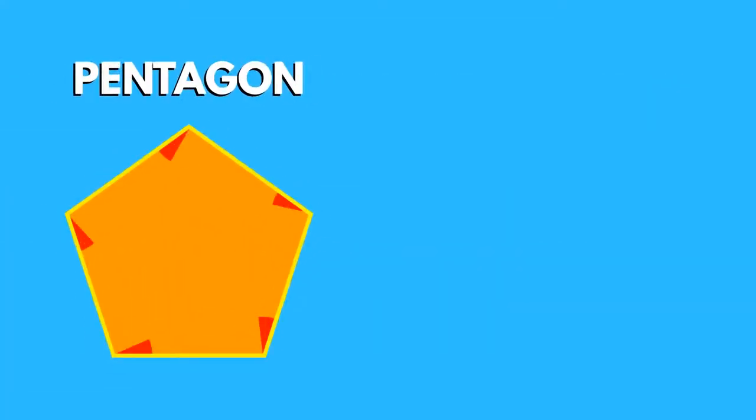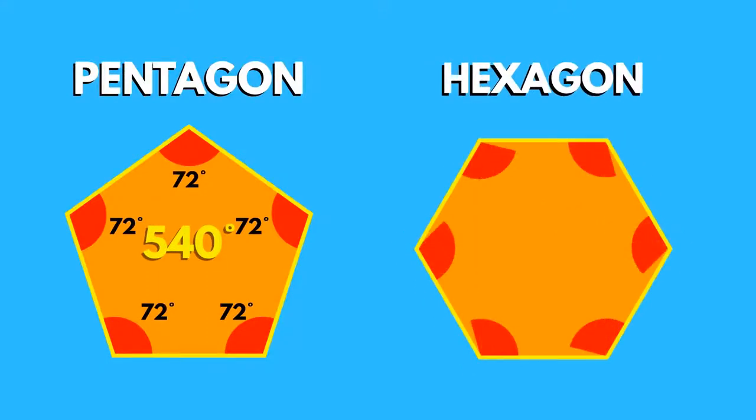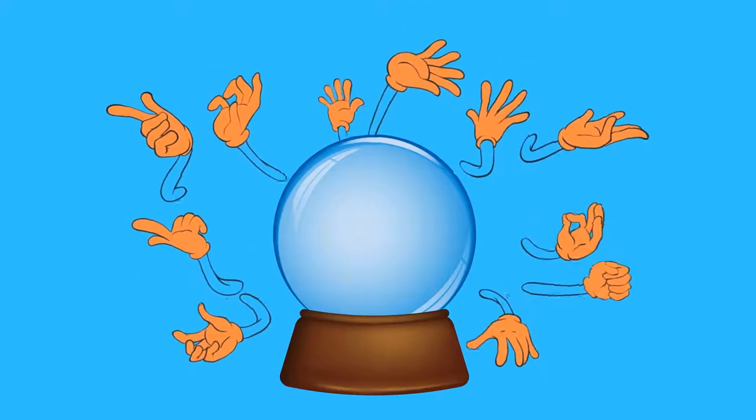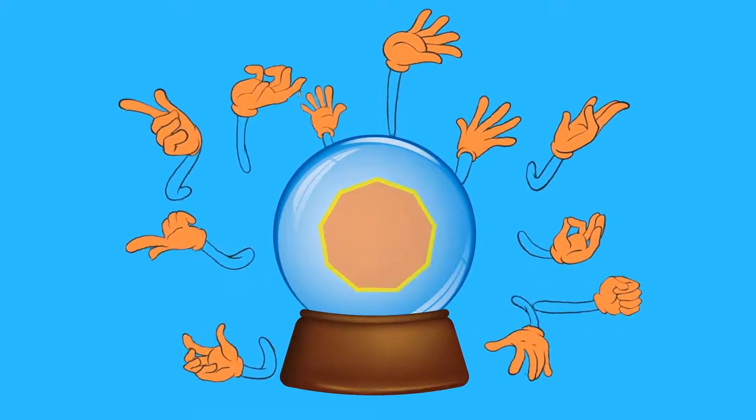In a pentagon, the internal angles always add up to 540 degrees, and in a hexagon, to 700 degrees. There is a trend here. Can you predict what the internal angles of a nine-sided shape would add up to?